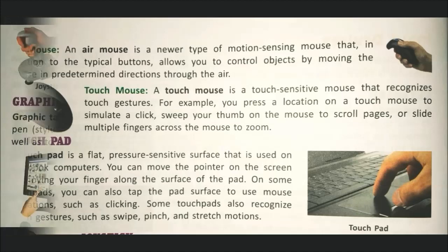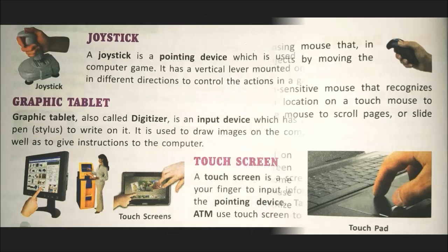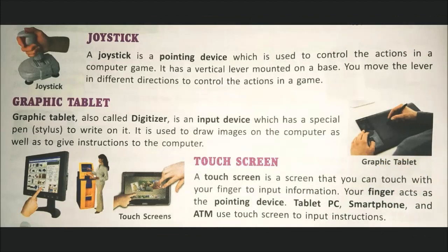Next is joystick. A joystick is a pointing device which is used to control the action in a computer game. It has a vertical lever mounted on a base. You move the lever in different directions to control the action in a game.